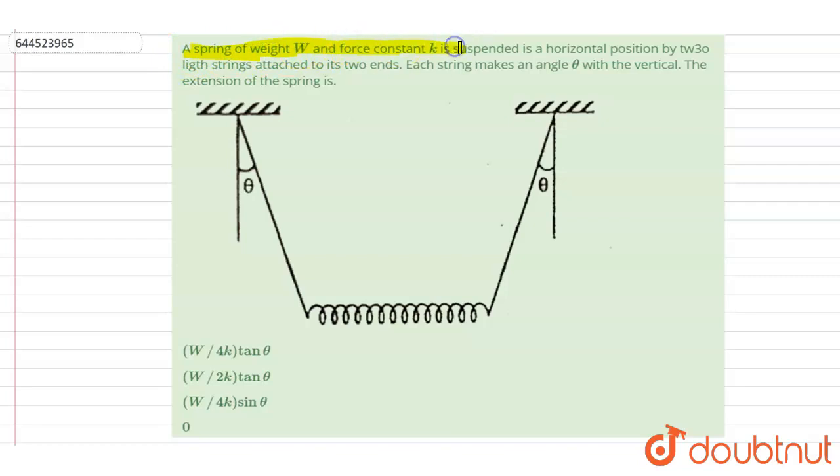A spring of weight W and force constant k is suspended in a horizontal position by two light strings attached to its end. Each string makes an angle theta with the vertical. The extension of the spring is... So if you see, this is the spring, right?